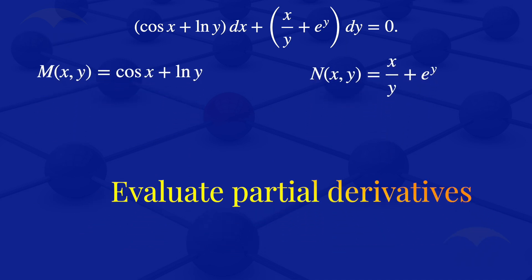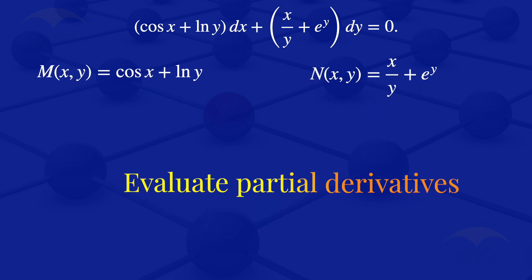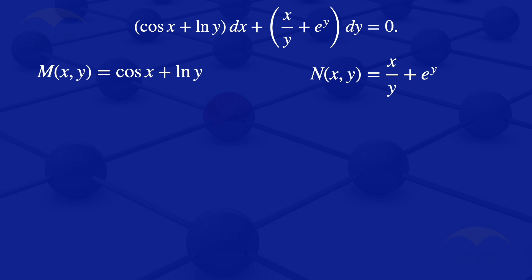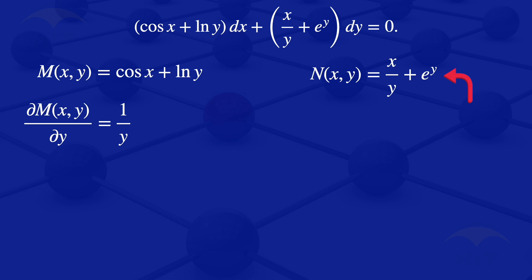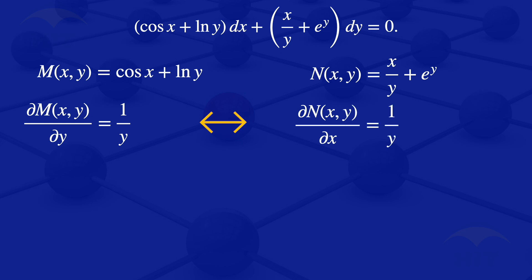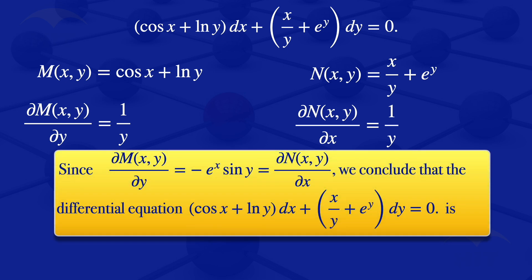I will now evaluate the partial derivative of M with respect to y. Differentiating M with respect to y gives 1 over y. Then differentiating N with respect to x gives 1 divided by y. Looking at these partial derivatives, they each have the value 1 divided by y — they are equal.